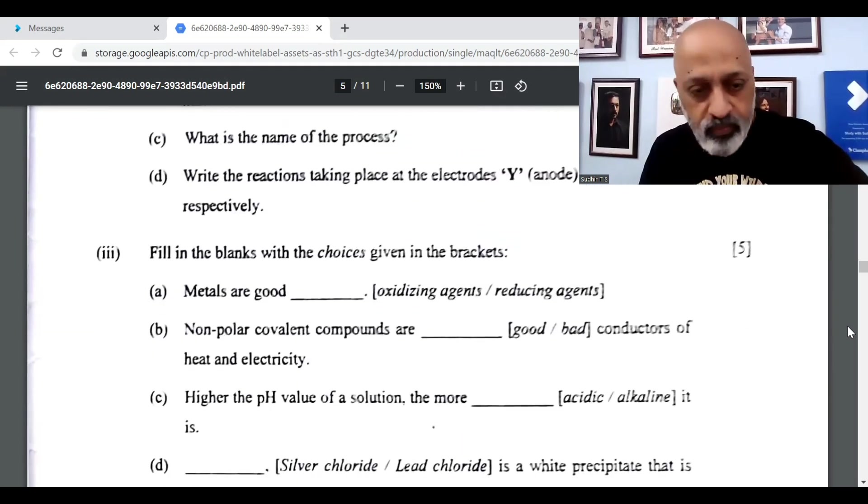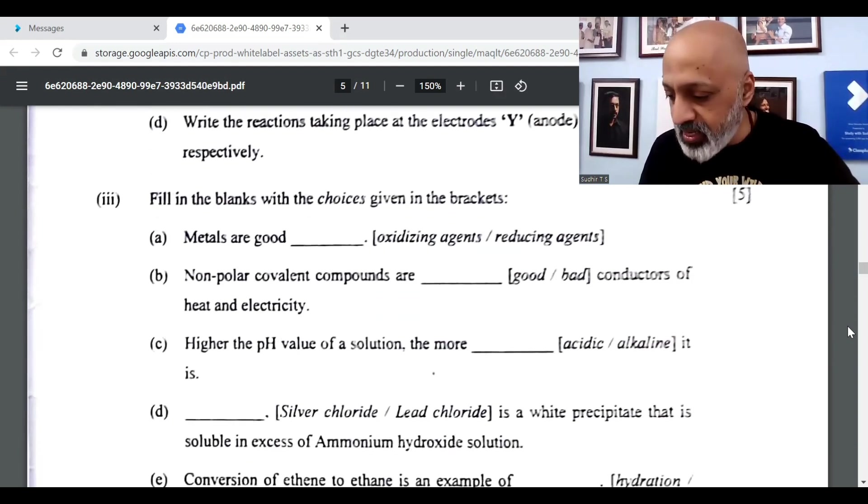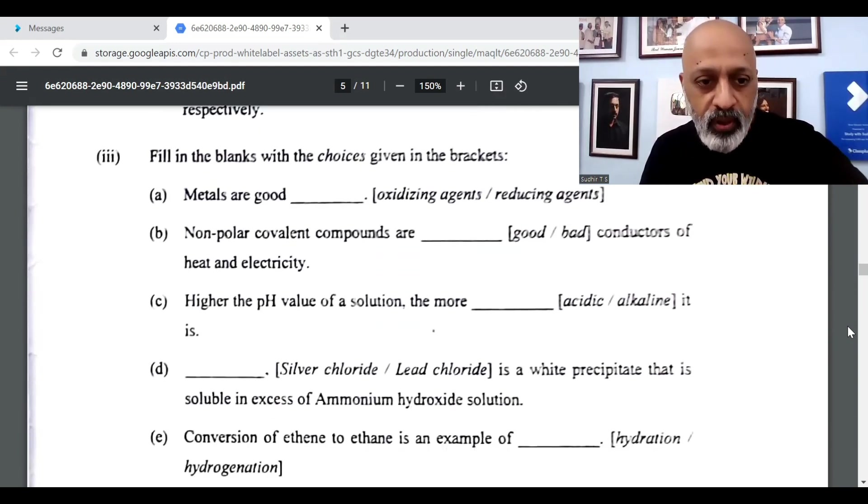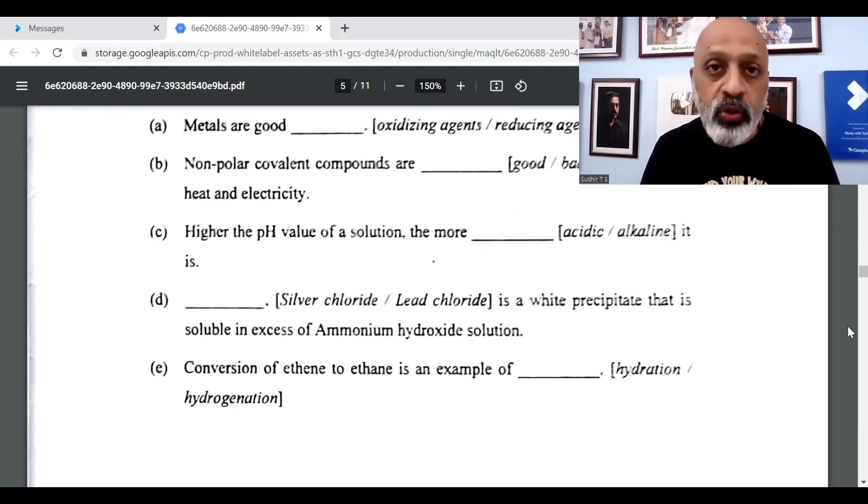Then the third one, reducing agents A. B is bad conductors of heat and electricity. C is alkaline. D, fill in the blanks, is silver chloride. And the 5th one is hydrogenation.